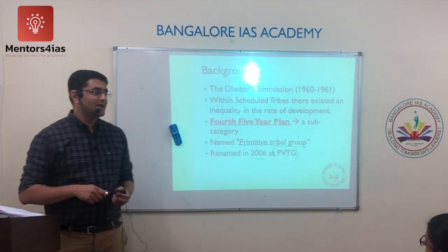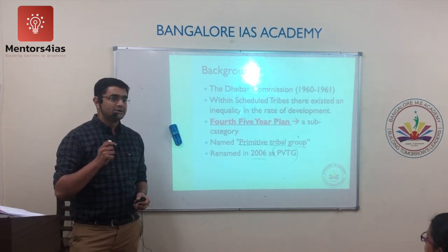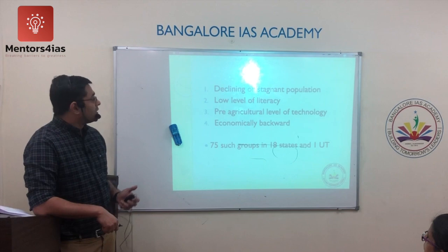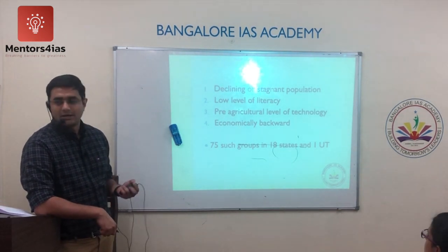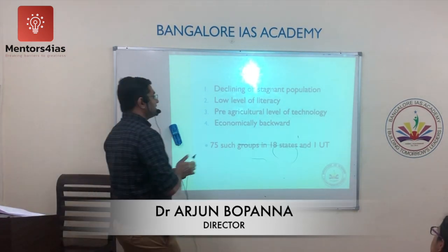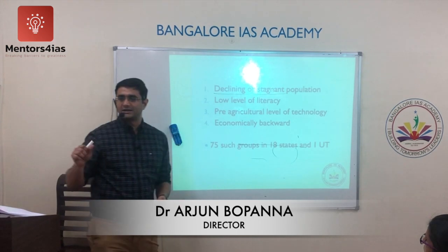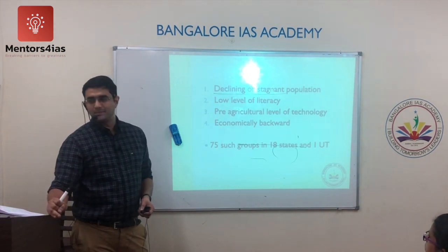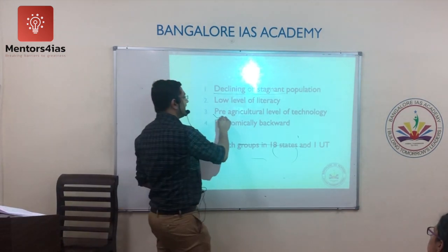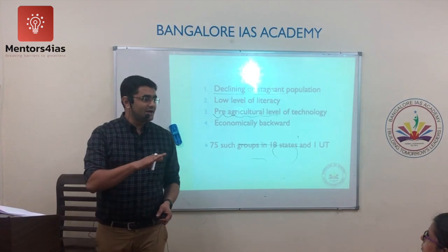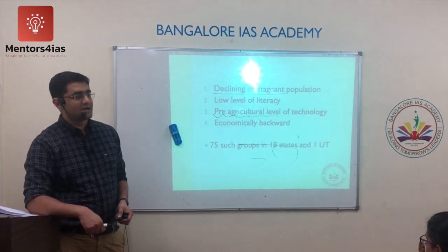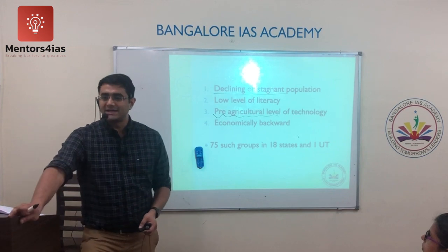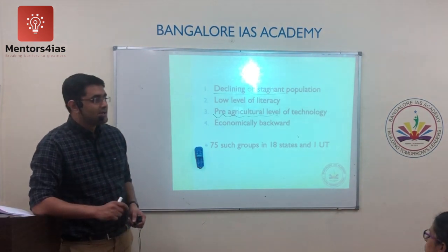Because the term connoted an ethnocentric nature, the category was renamed in 2006 as Particularly Vulnerable Tribal Group (PVTG). The defining features of a PVTG are: their population should be either declining or stagnant; they should have a low literacy rate compared to other tribal groups; they should be practicing pre-agriculture level technology such as hunting and gathering; and they should be economically backward.